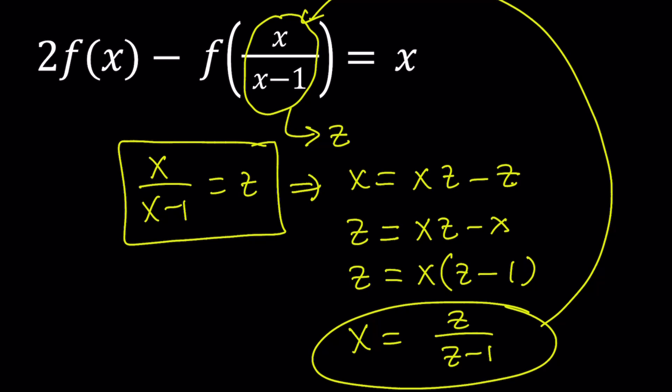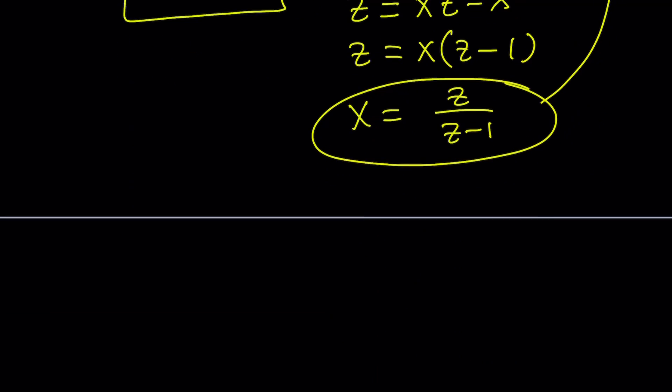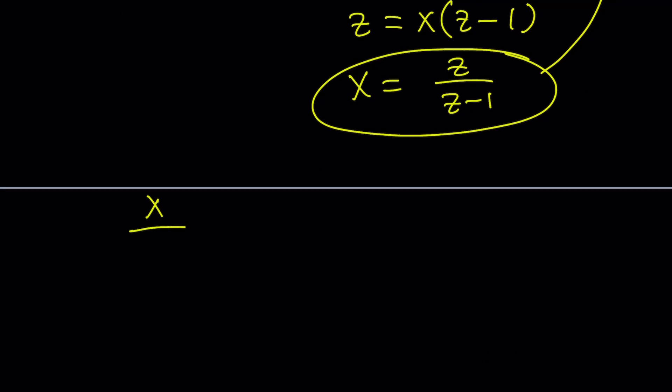But notice that the expression that we found for x is the same thing pretty much as what we have for z. It has the same structure: some variable divided by that variable minus 1. So that gives us really good information that we can go ahead and replace x over x minus 1 with x, or x with that. So here's what we're going to do. Here's how we're going to proceed.